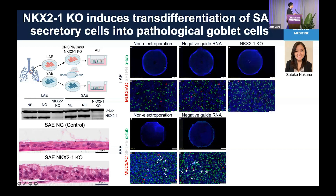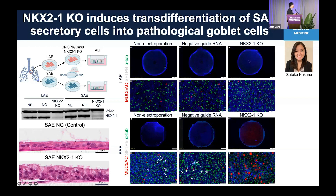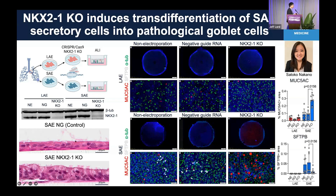When we knock out NKX2.1, there is virtually no difference in the large airway cultures. However, when we knock out NKX2.1 in the small airway cultures, they show a massive increase in MUC5AC-positive goblet cells, as our quantification shows. Also notably, SFTPB-positive normal small airway secretory cells are significantly decreased in the knockout cultures.